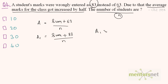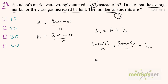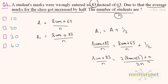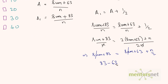It is given that the average increased by half, so a1 equals a plus one-half. Substituting: (sum + 83) / n = (sum + 63) / n + 1/2. Multiplying through by n and rearranging: sum + 83 = sum + 63 + n/2. The sum terms cancel, leaving 83 minus 63 equals n divided by 2, so 20 equals n over 2.